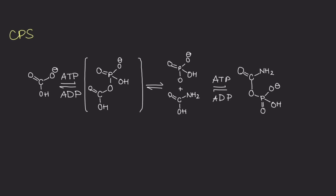The CPS1 gene provides instructions for making the enzyme carbamoyl phosphate synthetase 1. This enzyme participates in the urea cycle, a series of reactions that occurs in liver cells.